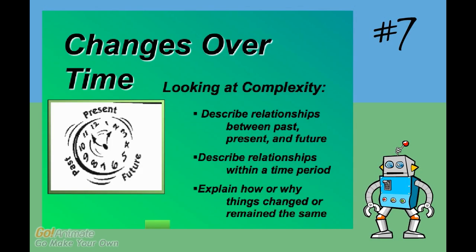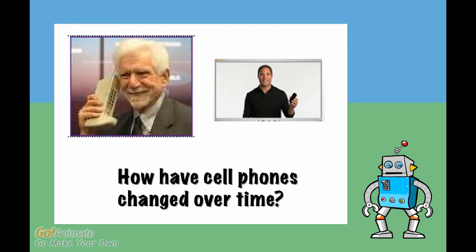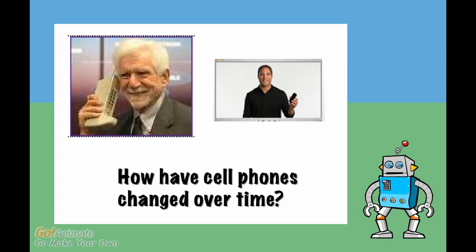The next icon is a clock. It stands for how something changes over time. These two pictures show how cell phones have changed over time. Isn't it funny that the first cell phone weighed almost five pounds?